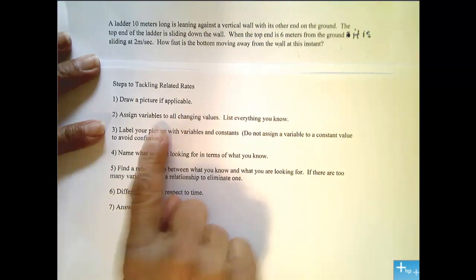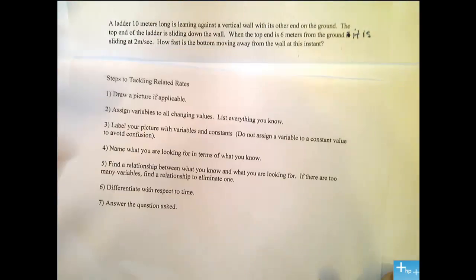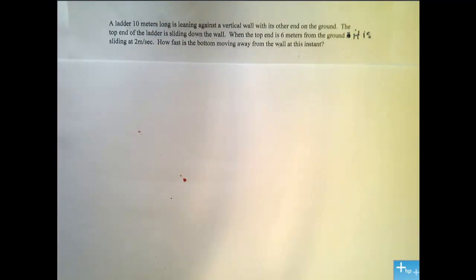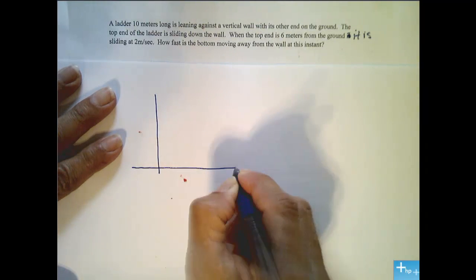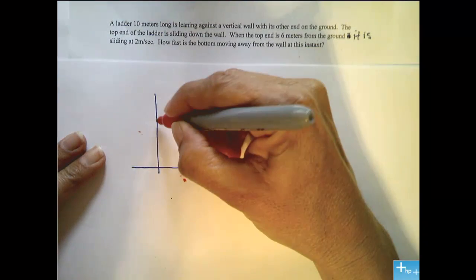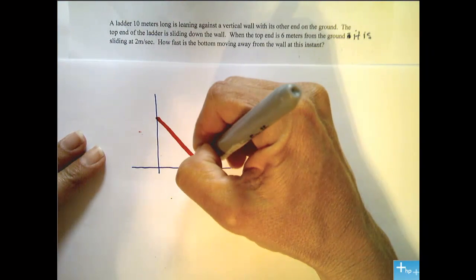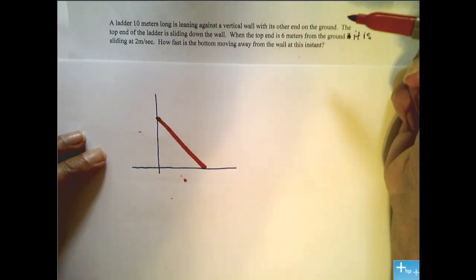So remember these steps. Step 1 is to draw a picture. Let's do that. So we're going to put our vertical wall in the ground, and then we're going to have a ladder leaning up against the wall. Okay, so that's the picture that describes what's happening.